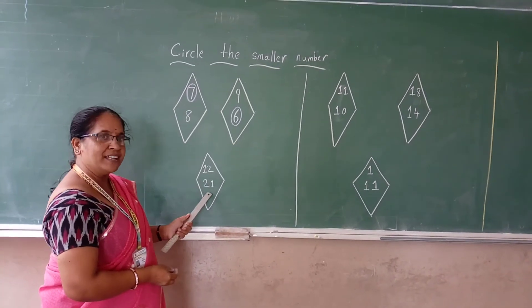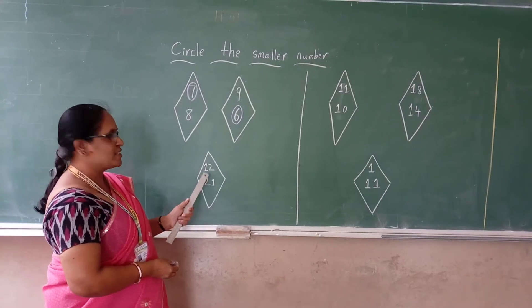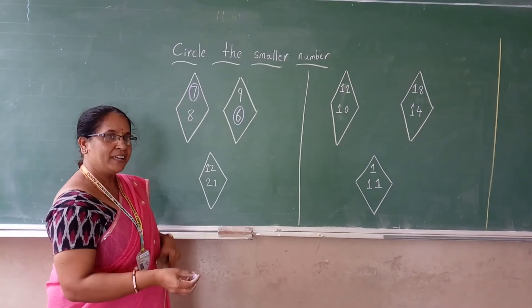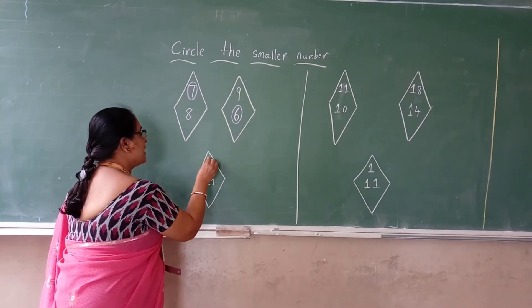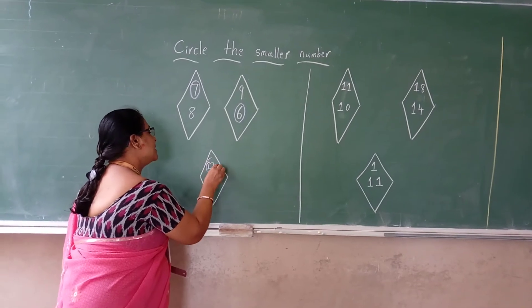Then in third box, 11 and 21 is given. In this box, which one is the smaller number? Tell me. 12. Which one is the smaller number? 12.